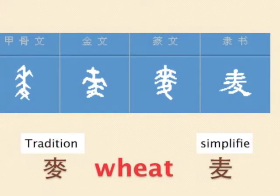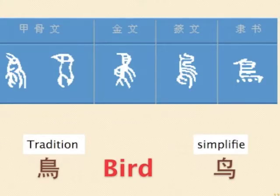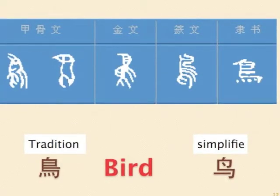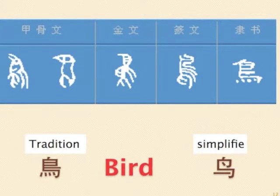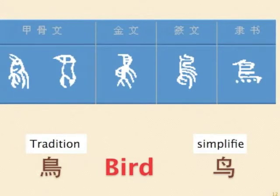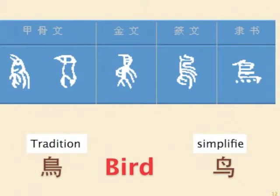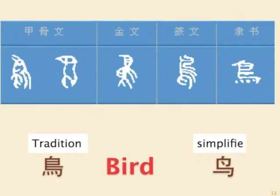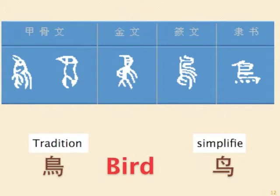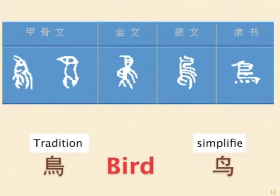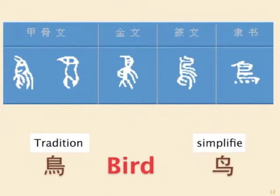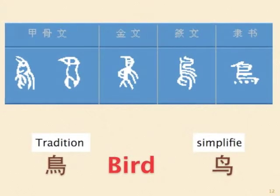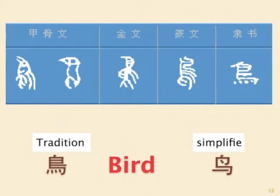Next word: bird. The ancient script of the word exactly sketches the appearance of a bird. The traditional form transforms the head part and uses four points to represent the feather and the claws. The simplified form further simplifies the head part and uses one horizontal bar to replace the four points.